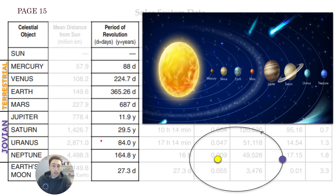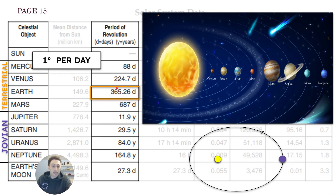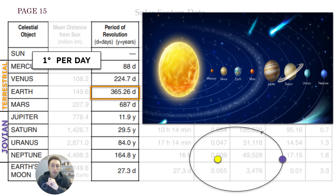You then have the period of revolution, which means how long it takes a planet to make one full orbit around the sun. D is in days and Y is in years, so it takes Mercury 88 days to make one full revolution. It takes Earth 365 days — that is how many days there are in a year, which is how long it takes Earth to make one full orbit around the sun.